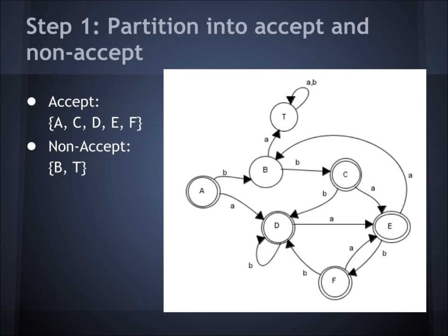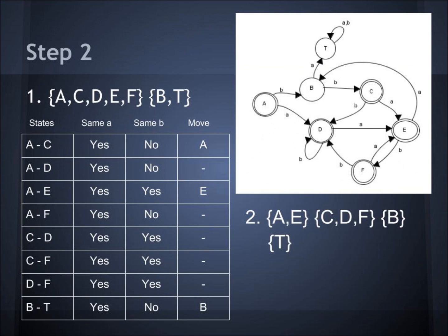Step 1: you partition into accept and non-accept states. The accept states are A, C, D, E, and F. The non-accept states are B and the trap state. Step 2: you check if two states can stay in the same subset. First, we check states A and C — do they go to the same subset on A? A goes to D, C goes to E — yes, they do. On B, A goes to B and C goes to E — those are in different sets, so A has to move.